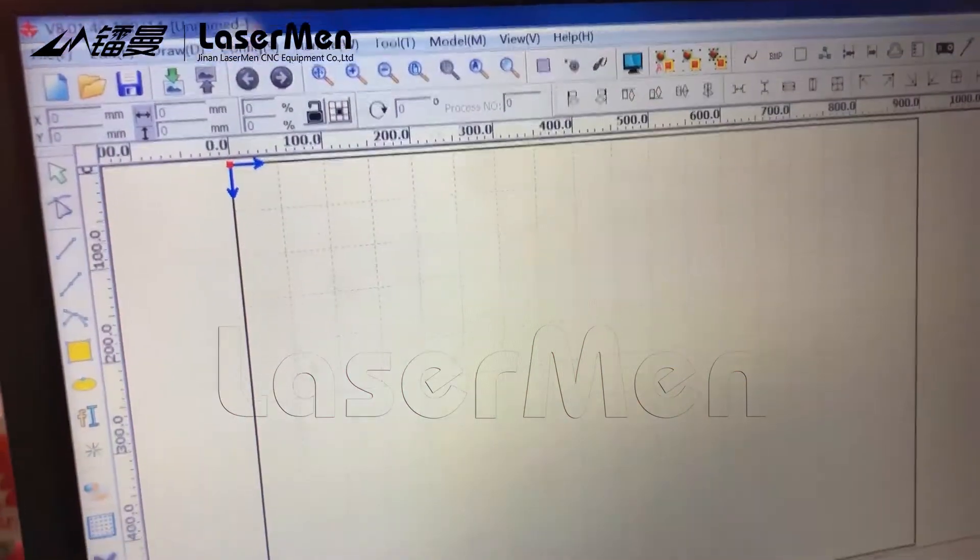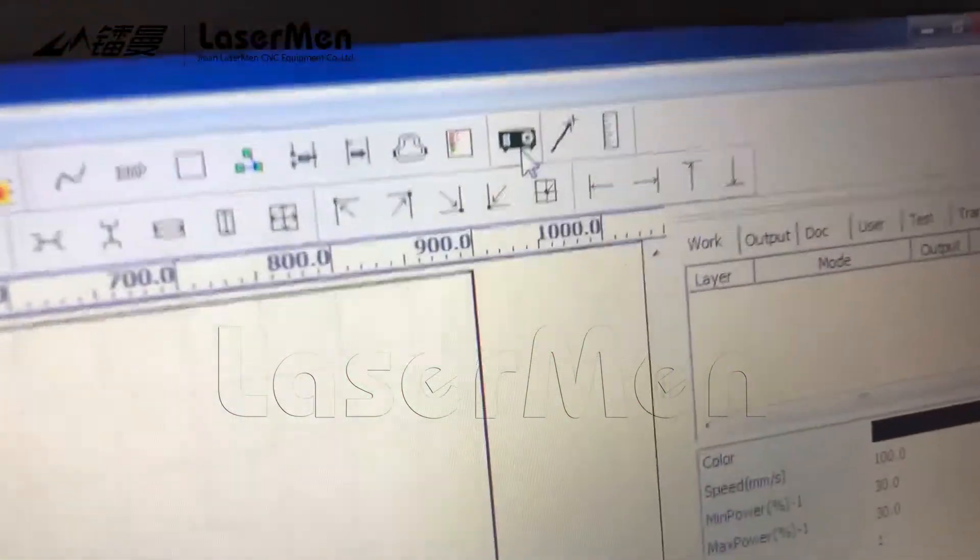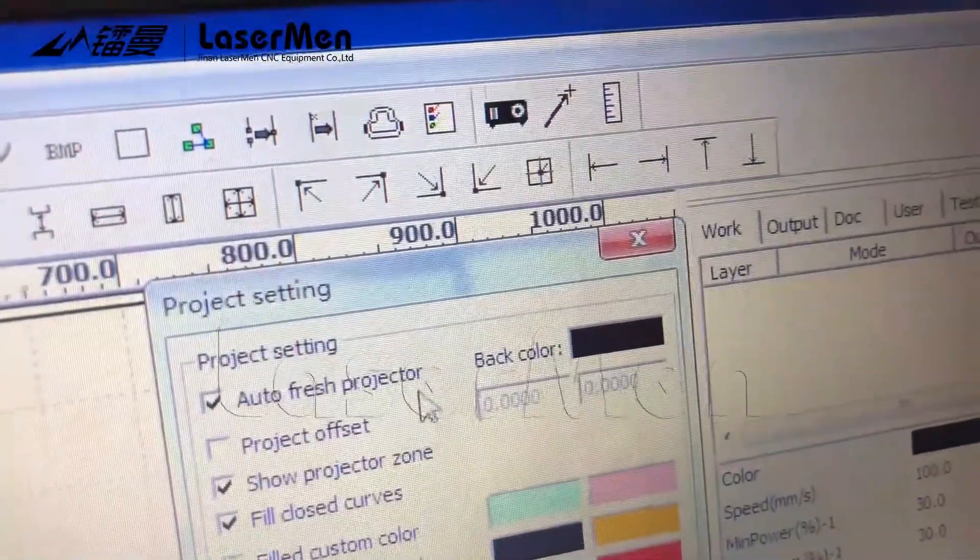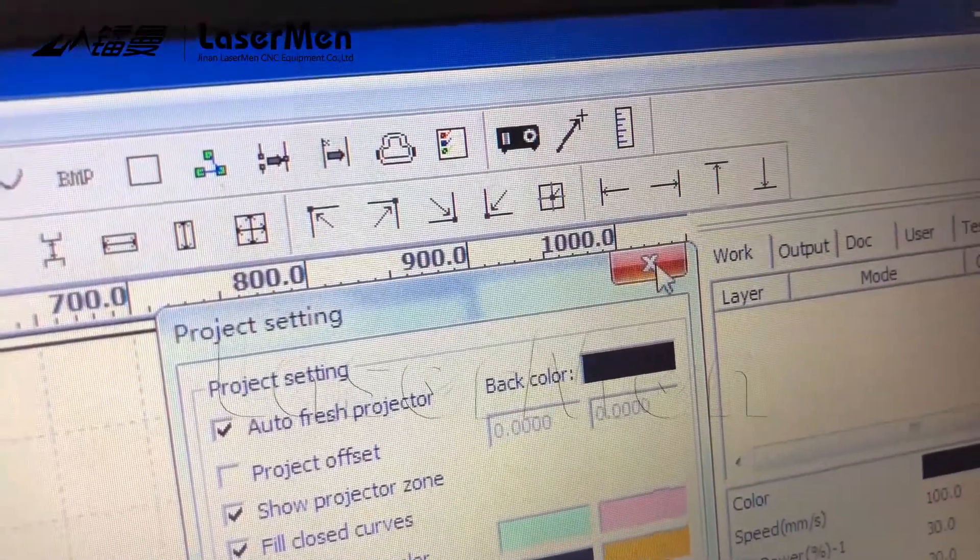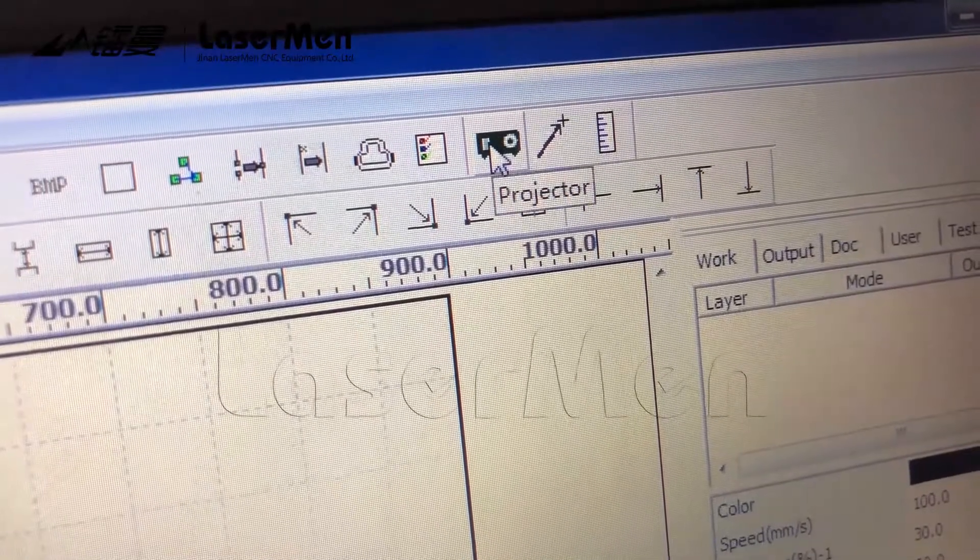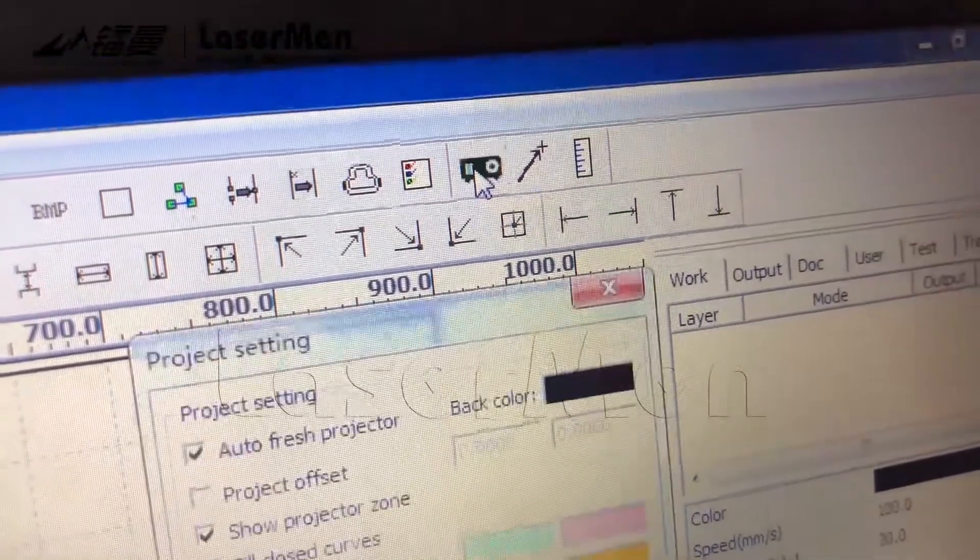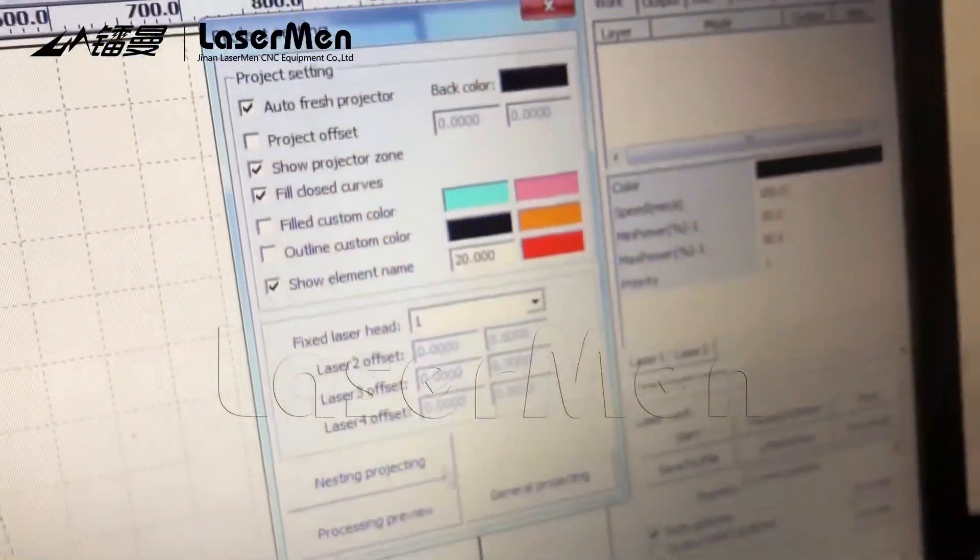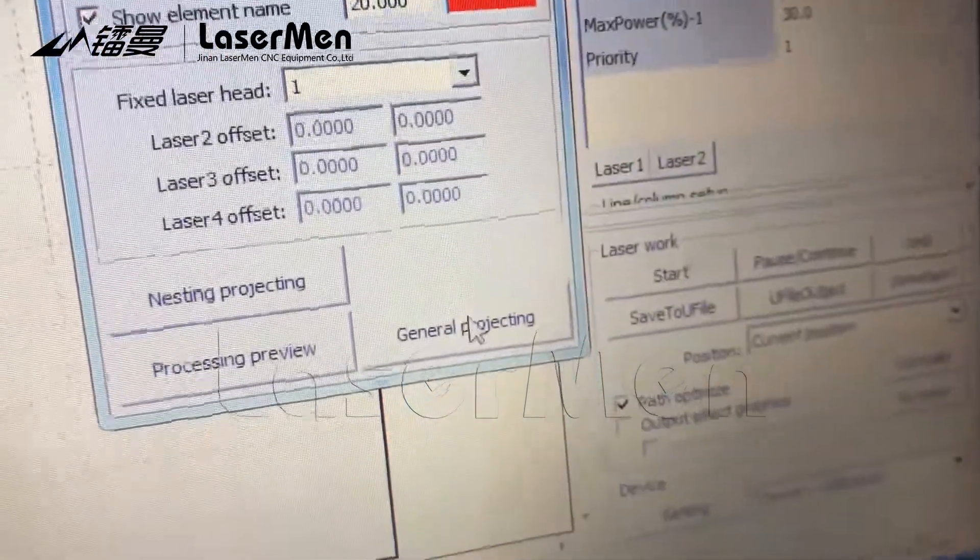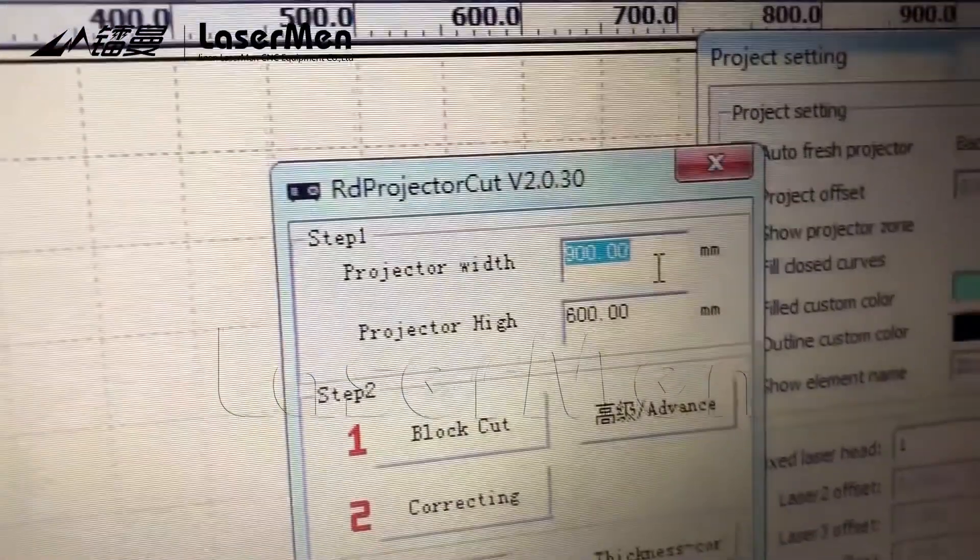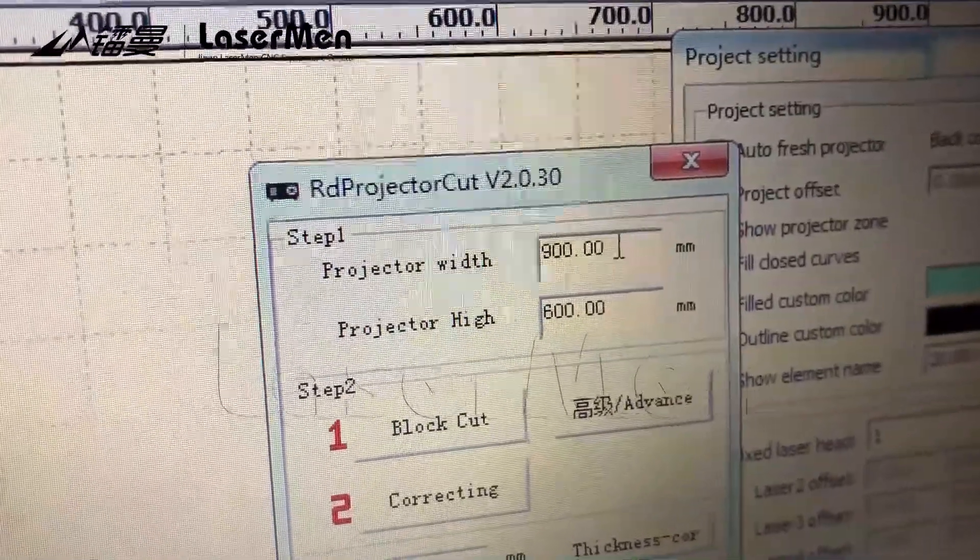Run the software, it already works. Click Projector, and then General Projecting. Step 1: Input the X and Y. Projector width is X.